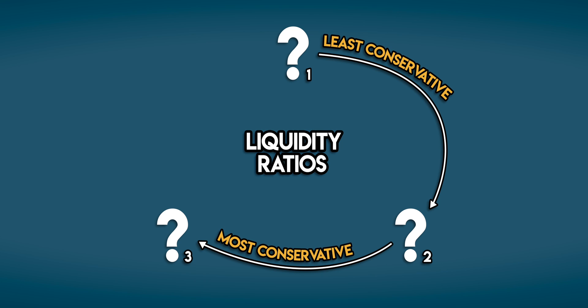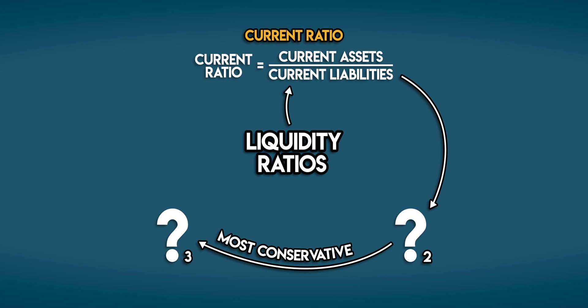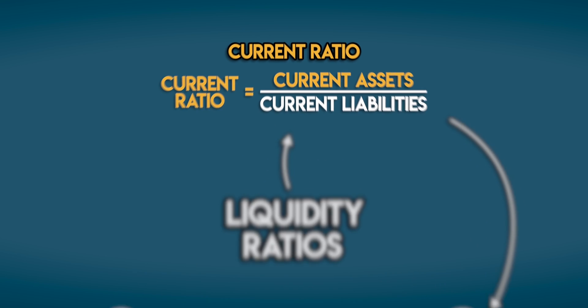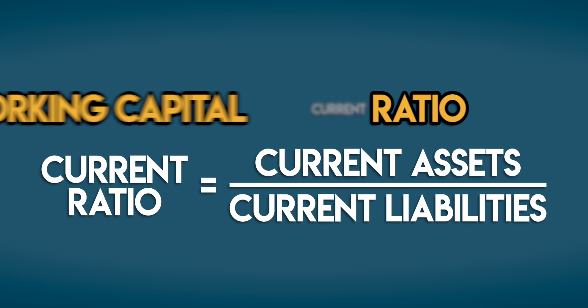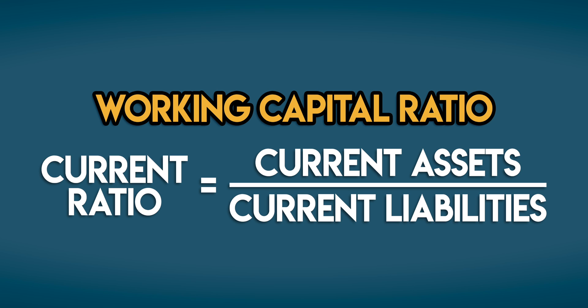We'll start with the least conservative ratio and make our way to the most conservative one. The least conservative liquidity ratio is the current ratio. We can work out the current ratio by taking a business's current assets and dividing them by its current liabilities. This is also called the working capital ratio.